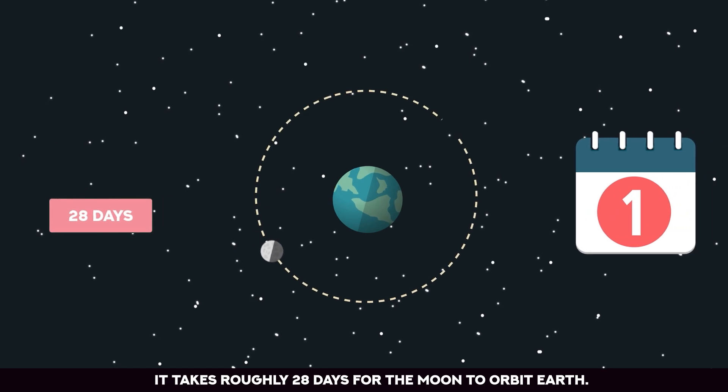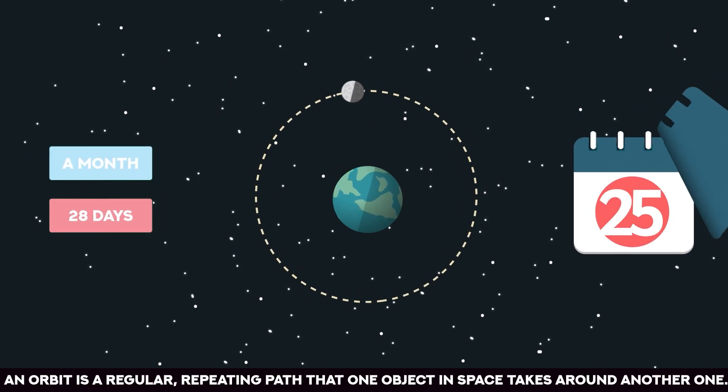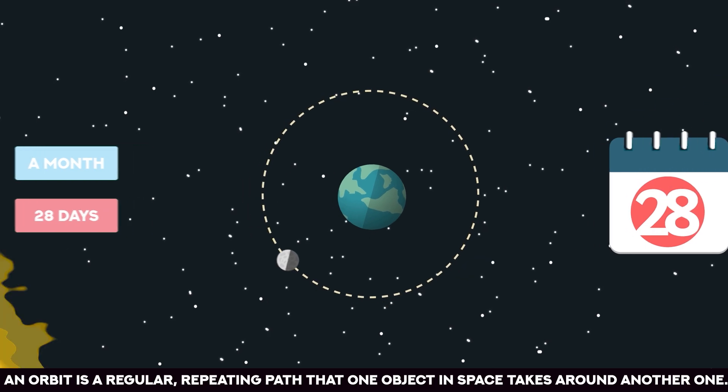It takes roughly 28 days for the Moon to orbit Earth. An orbit is a regular repeating path that one object in space takes around another one.